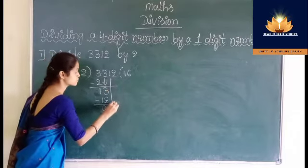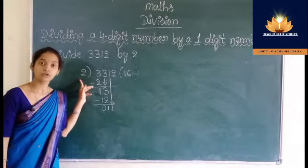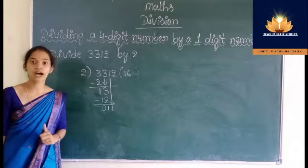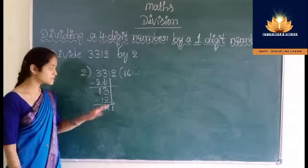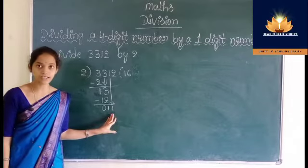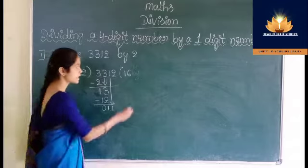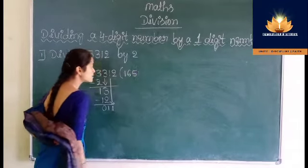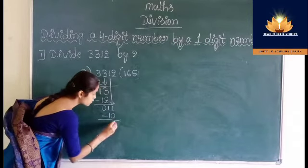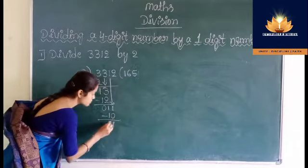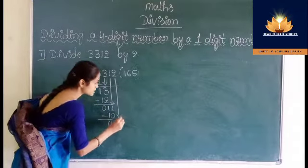Then bring down this 1. Now divide 11 by 2: 2 fives are 10, 2 sixes are 12. 12 is greater than 11, so we consider 2 fives are 10. Write 5 in place of quotient. Then write the product 10. 1 minus 0 is 1, 1 minus 1 is 0. Then bring down the next number, that is 2.